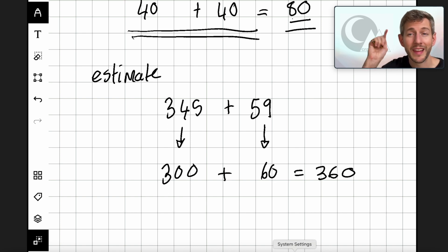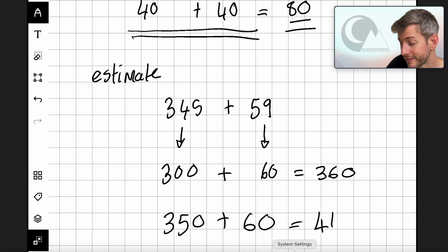I can hear that you're not too happy with this because you want to do 350 plus 60, and that would equal 410, which is a lot closer to what the answer would be. But in functional skills maths, when we're talking about estimating, we always have to round to the first number.